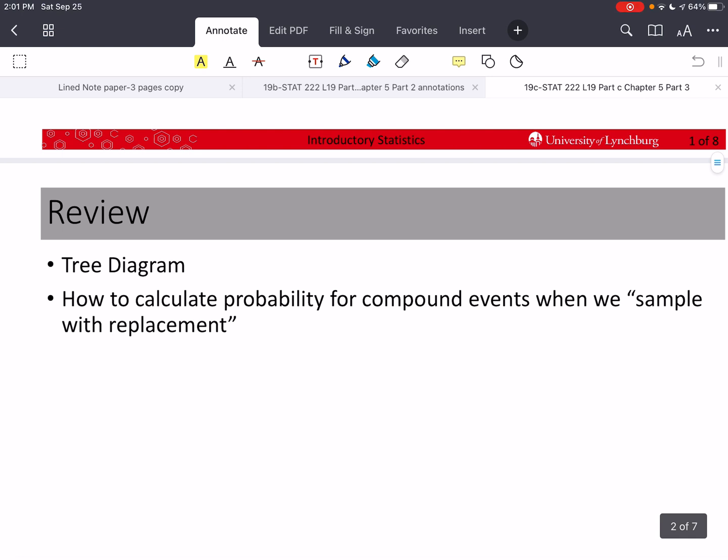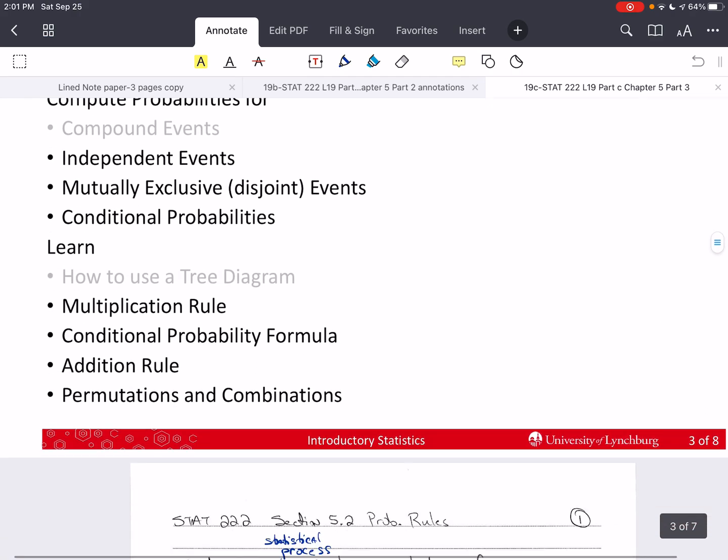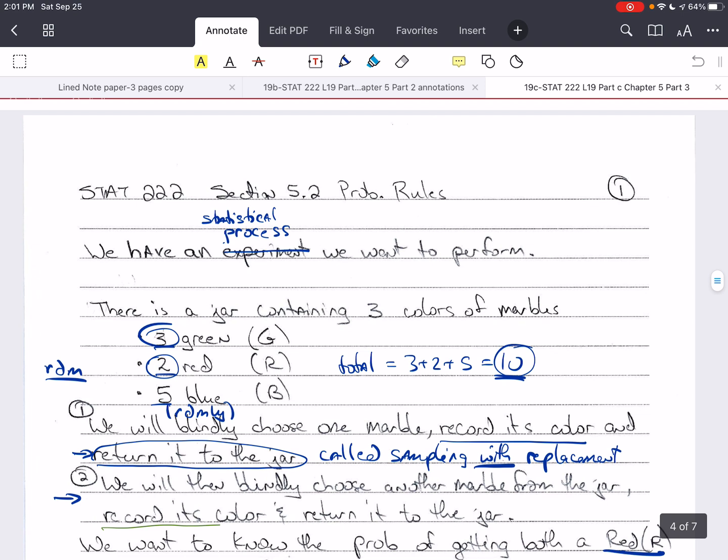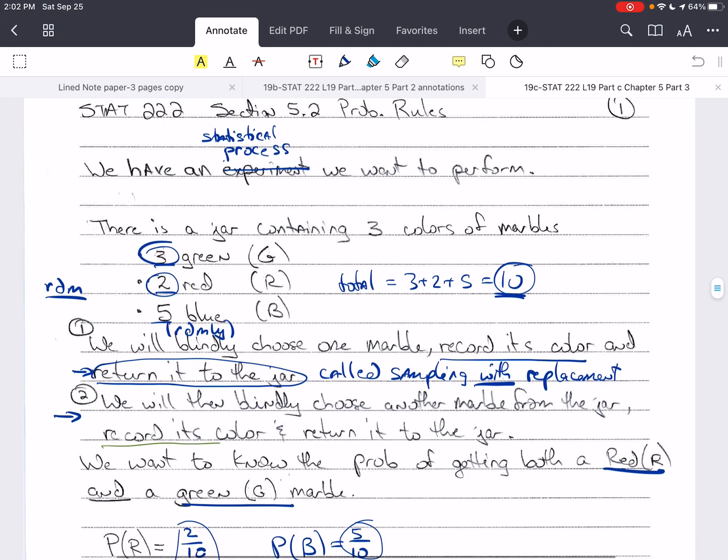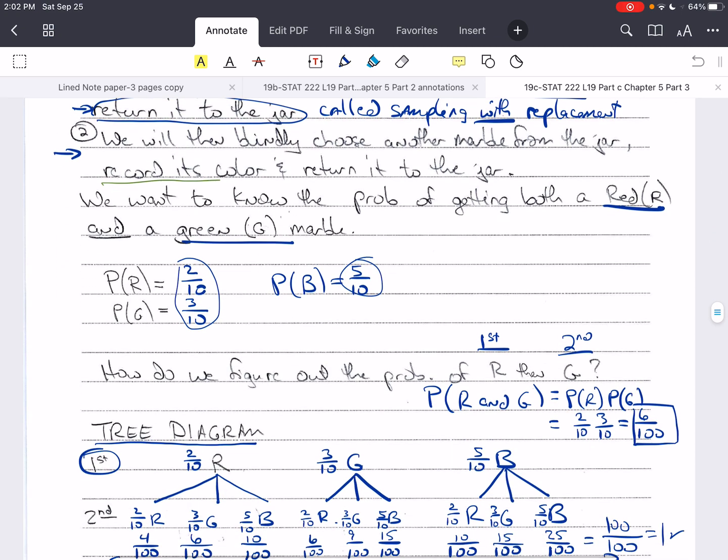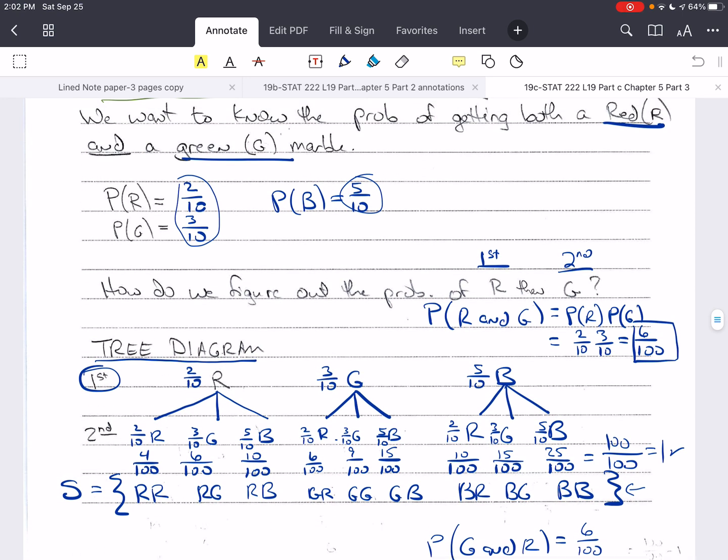Last time we learned how to use a tree diagram to find the sample space and probabilities of compound events, and this was with sampling with replacement. We said we had a statistical process that we want to perform, and we have a jar with three colors of marbles: three green, two red, five blue, for a total of 10. We randomly selected one marble, recorded its color, put it back, randomly selected a second one, recorded its color, and then put it back. Then we calculated probabilities and used this tree diagram to do so.